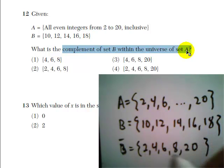So the complement of B is 2, 4, 6, 8, 20, which is answer choice 4.